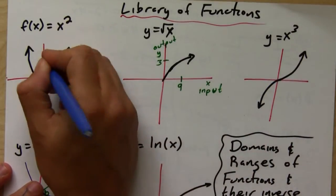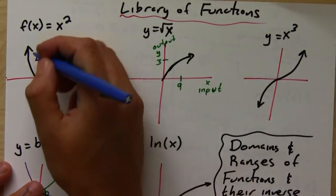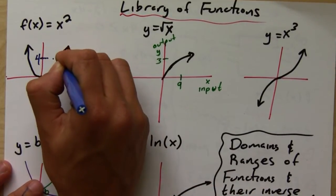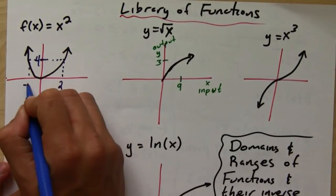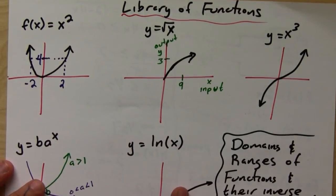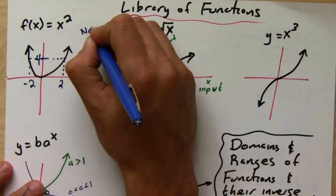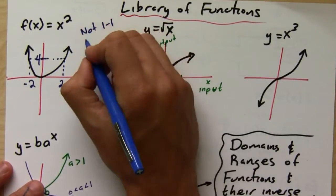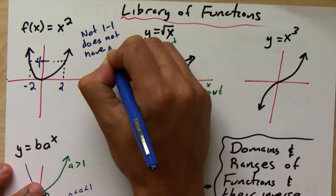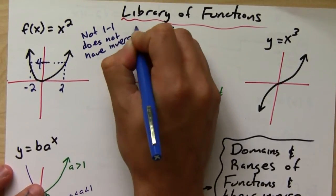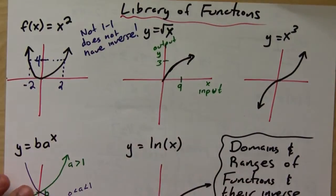For example, here where Y equals 4, notice that Y equals 4 can come from two different inputs — it can come either from positive 2 or negative 2. That means Y equals X squared is not one-to-one, and it does not have an inverse. This is where the horizontal line test comes from: if you can pass a horizontal line through your function and it only hits once, then it's going to have an inverse.